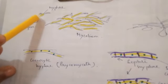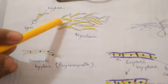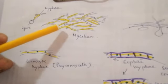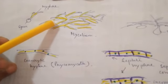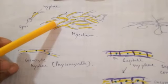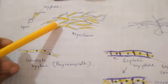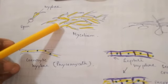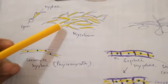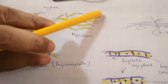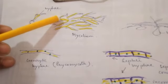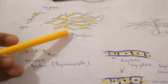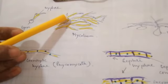Spores germinate to form hyphae; the hyphae branch and become interwoven, finally forming the mesh called mycelium. They form this mycelium because they are heterotrophic and have to take food from others — whether dead or living. They either directly absorb food from another body or extracellularly digest the food and then absorb it. More surface area means more food absorption. So fungi do not grow in height but spread across the surface to provide more surface area for absorption.